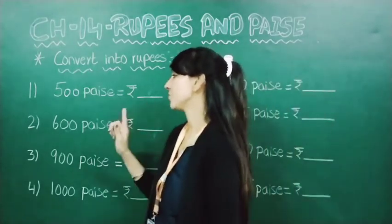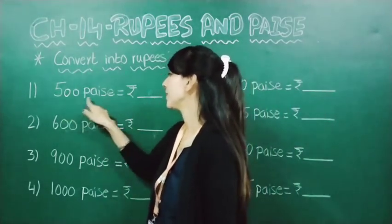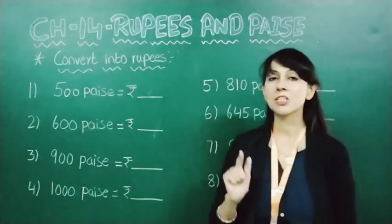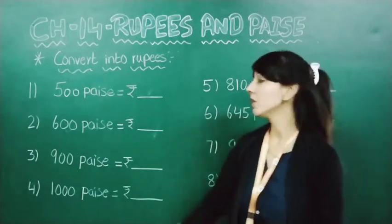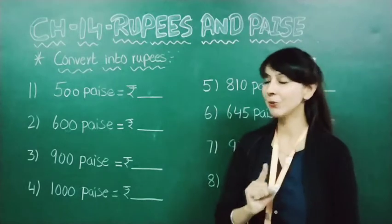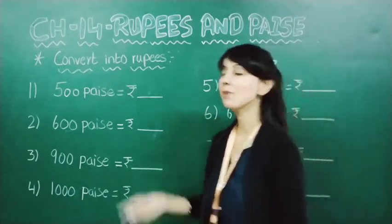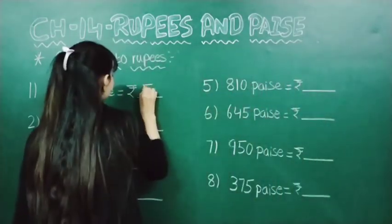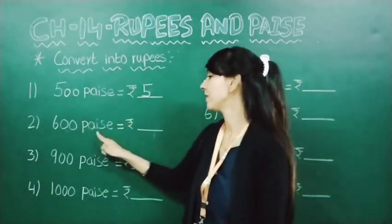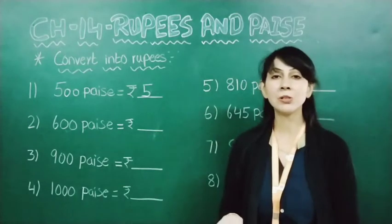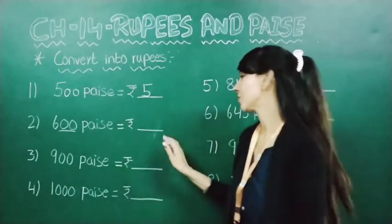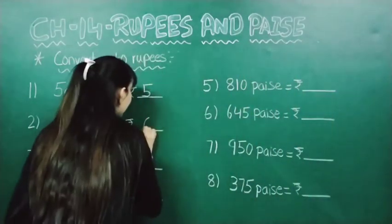Here you can see it's written 500 paise. While converting, we just have to remove these two zeros you can see on the right side. So this will become 5 rupees. Now 600 paise — same thing you will do, you will just remove these two zeros. So this will become 6 rupees.